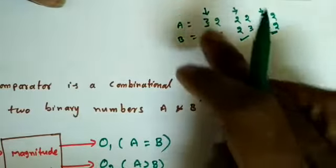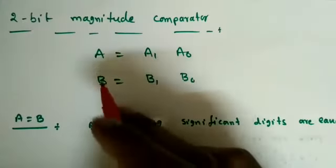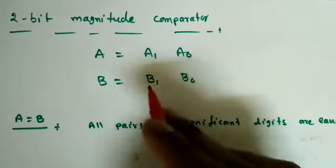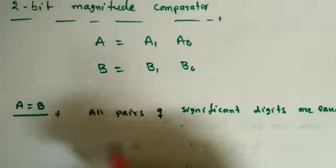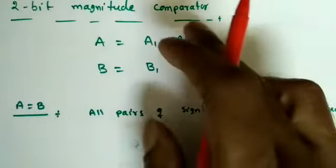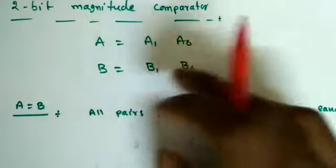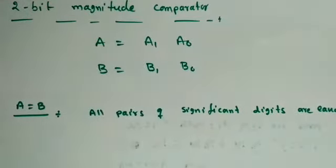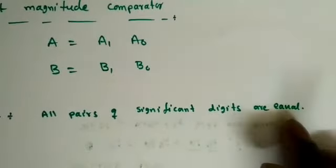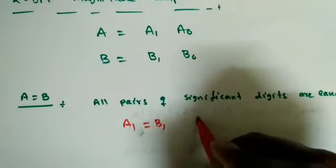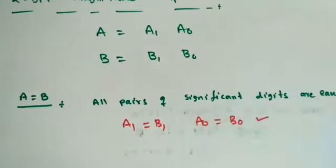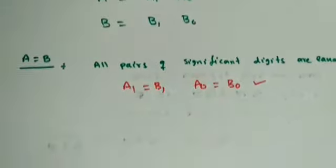Similarly in digital systems we compare relative magnitudes. Now we will see a two-bit magnitude comparator — each binary number contains two bits, A1 A0 and B1 B0. To check A is equal to B, we check all pairs: A0 B0 and A1 B1. If all pairs are equal then both numbers are equal. So A1 must equal B1 (the most significant bits) and A0 must equal B0 — if both are satisfied we can say A is equal to B.